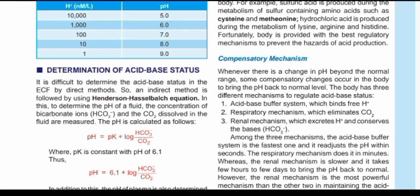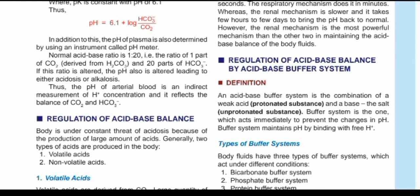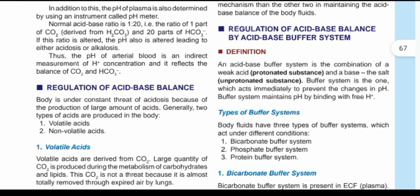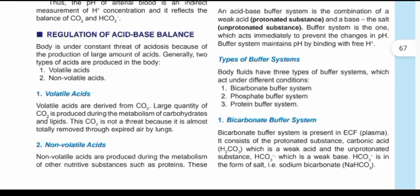The compensatory mechanisms for pH changes in the body include the acid-base buffer system, the respiratory mechanism, and the renal mechanism — all of these help regulate acid-base balance. A buffer is a solution of a weak acid and its conjugate base. One side already has the acid dissociating to give its conjugate base. Buffers use a weak acid — not a strong acid — to withstand changes in the body and maintain the pH.